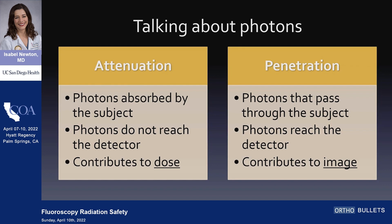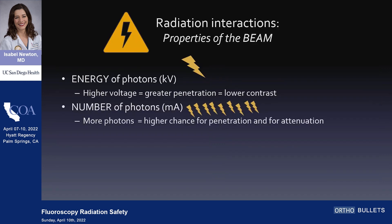Let's talk about photons. There are two things you really need to know. One is attenuation — these are the photons that are absorbed by your subject. They do not reach the detector and they contribute to dose. Anything that's absorbed by the subject contributes to dose. It also contributes to the image because those photons that don't show up there — you infer that there's something in the way. Whereas penetration refers to those photons that pass through the subject and reach the detector, which actually contribute to the image as a photon that gets to the detector.